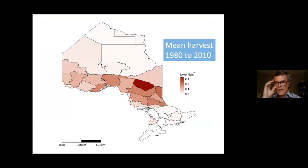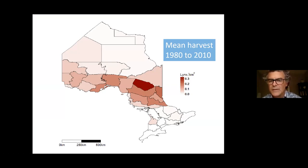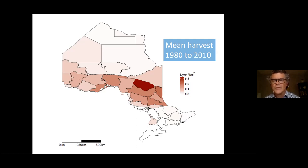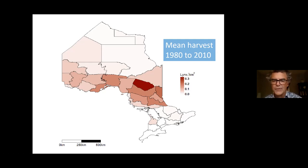This map shows the mean harvest of lynx in Ontario between 1980 and 2010. The dark colors indicate more lynx. In the far south there are almost no lynx harvested, and in the far north there are also very few, so they're in the boreal and coniferous forest near the tree line. Their peak abundance is in that mid-latitudes area in Ontario.